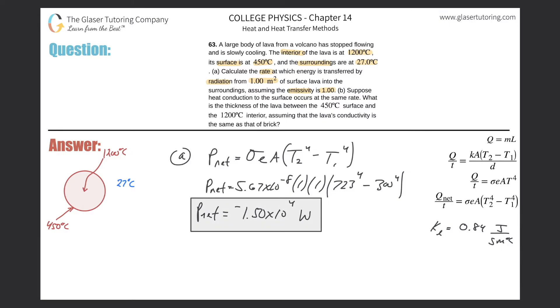Part B: Suppose heat conduction to the surface occurs at the same rate, meaning the rate at which we just found here. What is the thickness of the lava between the 450 degrees Celsius surface and the 1200 degrees Celsius interior, assuming the lava is the same as brick?